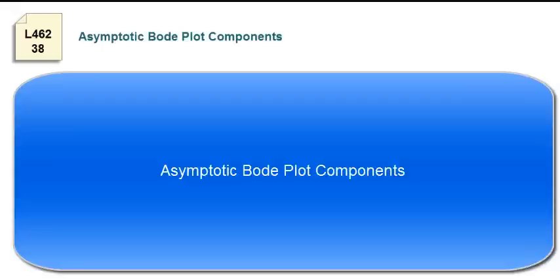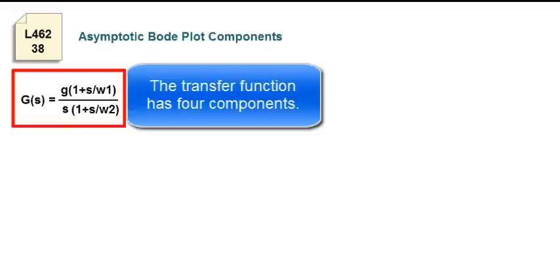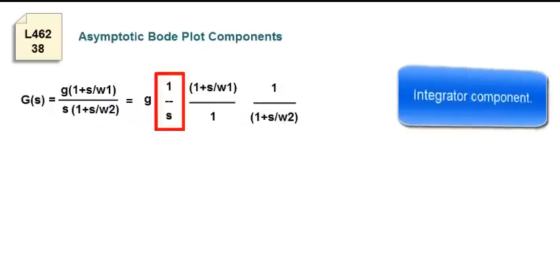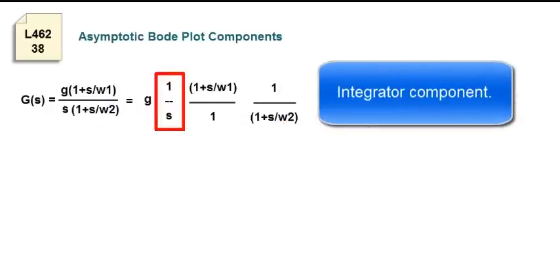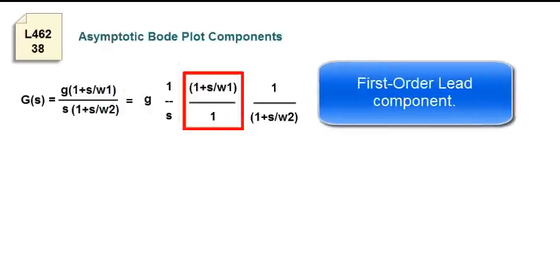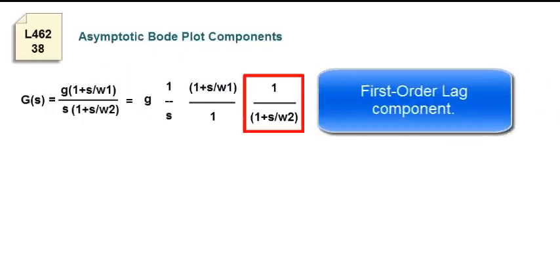Asymptotic Bode Plot Components. The transfer function has four components: a gain component, an integrator component, a first-order lead component, and a first-order lag component.